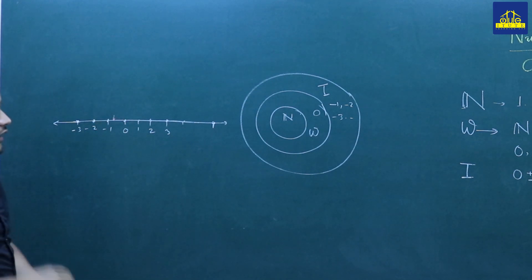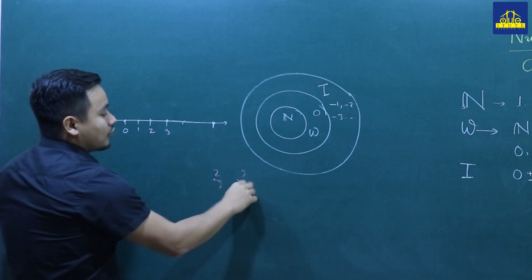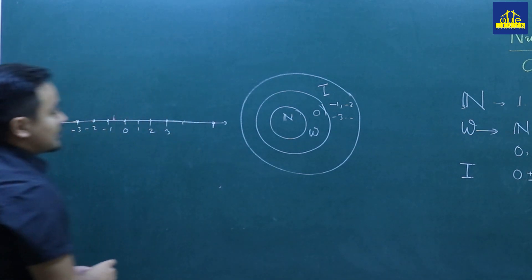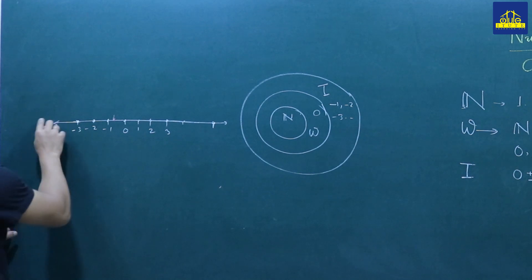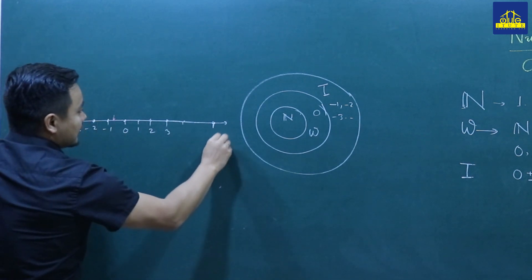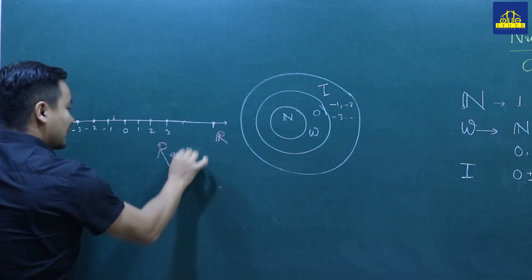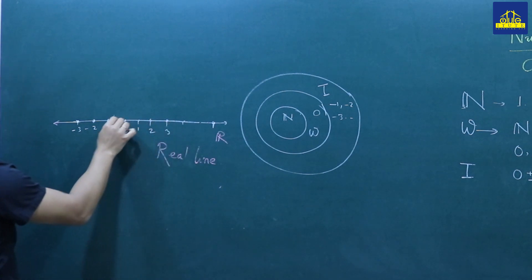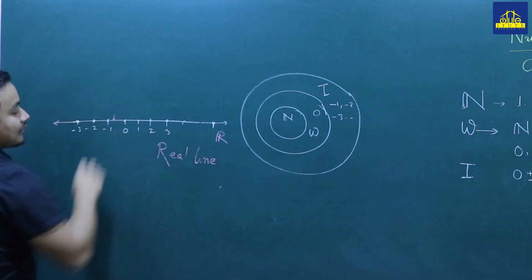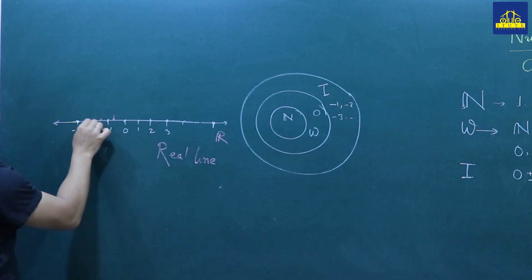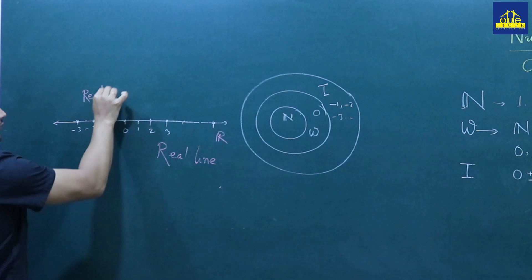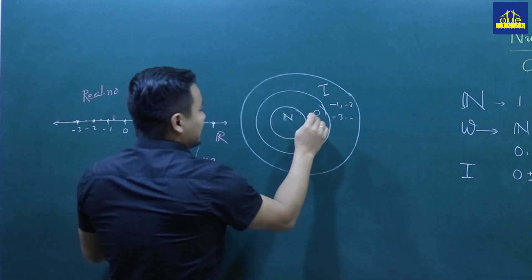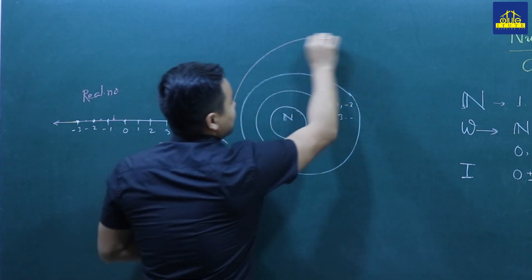Any point on the number line represents a real number. The natural numbers, whole numbers, and integers are all real numbers.